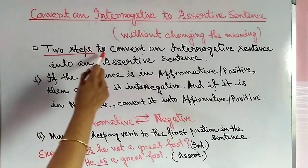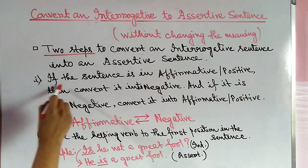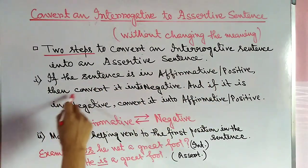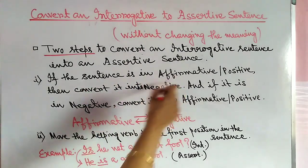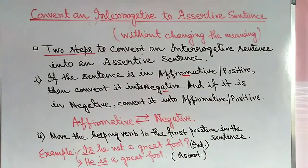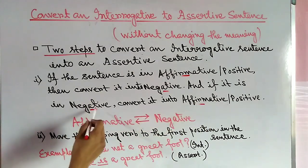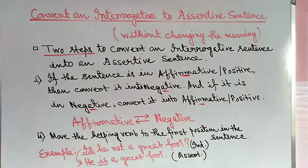There are two steps to convert an interrogative sentence into an assertive sentence. Step number one: if the sentence is affirmative or positive, then convert it into negative. And if the sentence is negative, convert it into affirmative.